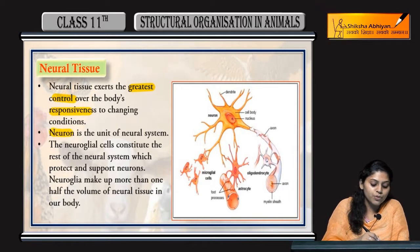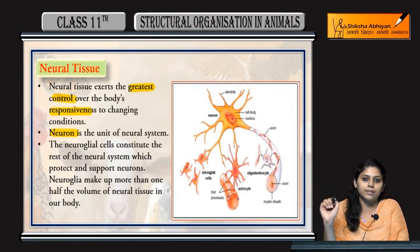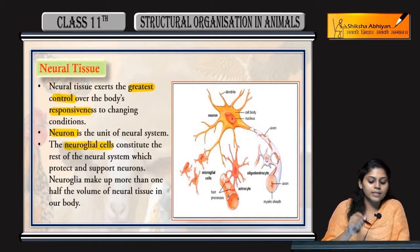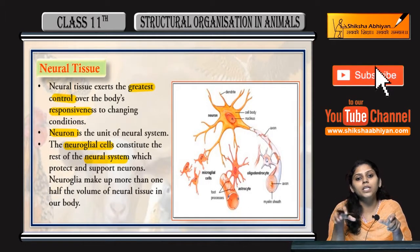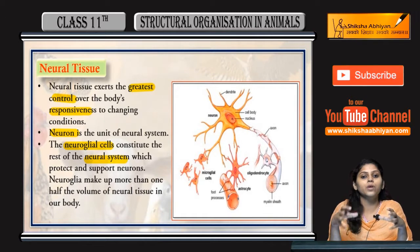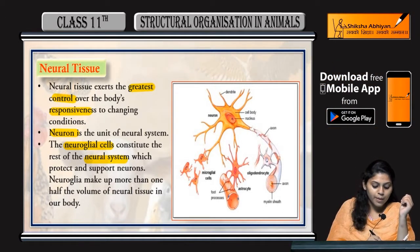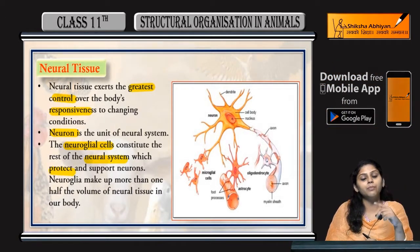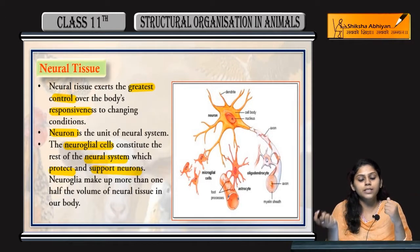Neuron is the structural and functional unit of nervous system, or neural tissue system. Neuro glial cells hoti hain that constitute the rest of the neural system. Neural system mein neurons hain aur baqi neuro glial cells hain — yeh poora ek neural tissue system banata hai. Neuro glial cells protect karti hain aur support karti hain neurons ko.